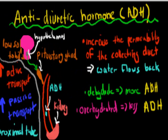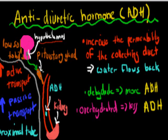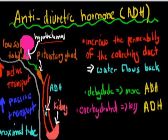The other hormone you need to know is the antidiuretic hormone, ADH. The antidiuretic hormone is actually produced by the hypothalamus. It travels down from the hypothalamus into the pituitary gland, which is where it is stored. If we're dehydrated, we release more ADH; if we're overhydrated, we produce less ADH. Too little water means we produce more ADH; too much water means we produce less ADH. That ADH then travels from the bloodstream into the kidney, where it has its effect.